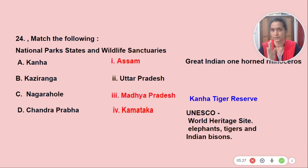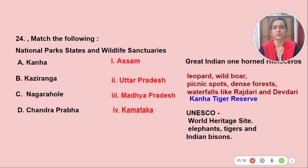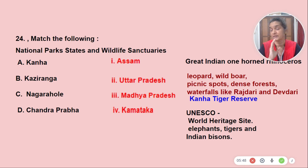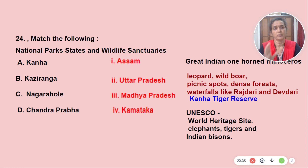The Indian Rhinoceros is famous here. Nagarhole is in Karnataka. In UNESCO, it is a World Heritage Site. Chandraprabha is located in Uttar Pradesh, known for Leopard, Wild Bori. Chandraprabha has a lot of picnic spots and waterfalls.